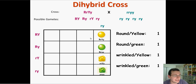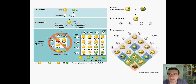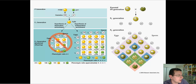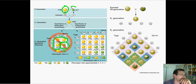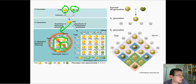Mendel figured out the law of independent assortment by doing crosses like these. If traits did not independently assort, you would never get combinations like green and round — the alleles would stick together. You'd only get two groups if yellow were permanently attached to round. But instead of dependent assortment, which was Mendel's original hypothesis, the crosses revealed independent assortment.